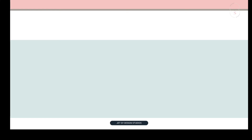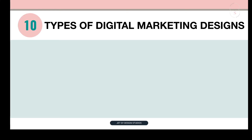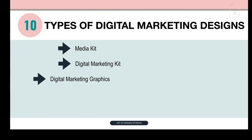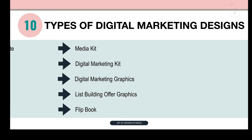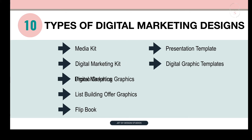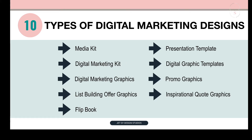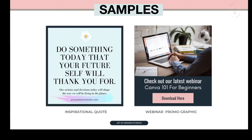So here are 10 types of digital marketing designs that you can create with Canva: a media kit, a digital marketing kit, digital marketing graphics, list building offer graphics, flipbook, presentation template, digital graphic templates, promo graphics, inspirational quote graphics, and discount promo images. And here are some of the samples — we have an inspirational quote and a webinar promo graphic.